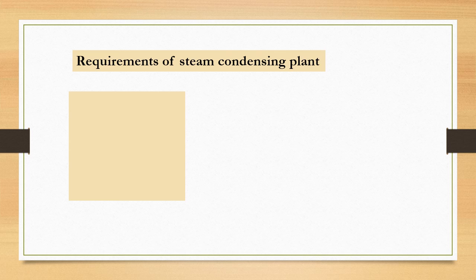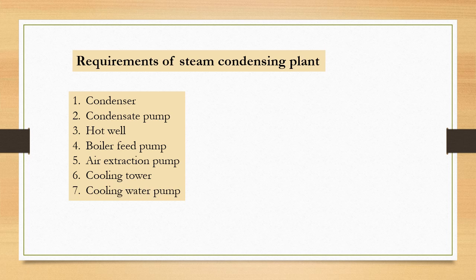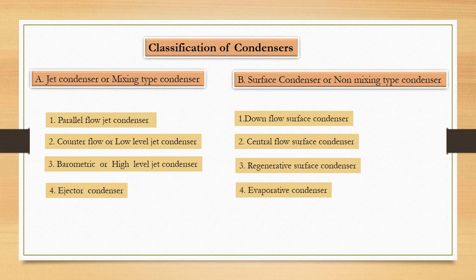Now we will see requirements of steam condensing plant. They are: condenser obviously, second one is condensate pump, third one is hot well, fourth one is boiler feed pump, fifth one is air extraction pump, sixth one is cooling tower and last one is cooling water pump.